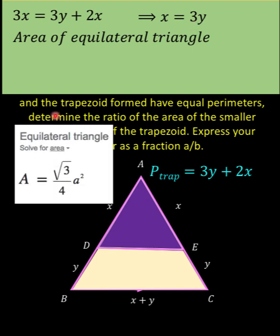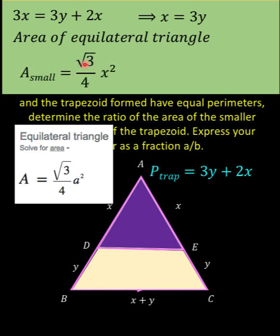Now for the area of the equilateral triangle, let's recall that the formula for the area of an equilateral triangle when we know the side length is (√3 / 4) times the square of the side length. For our small equilateral triangle, the side length is X, so its area is (√3 / 4) × X².